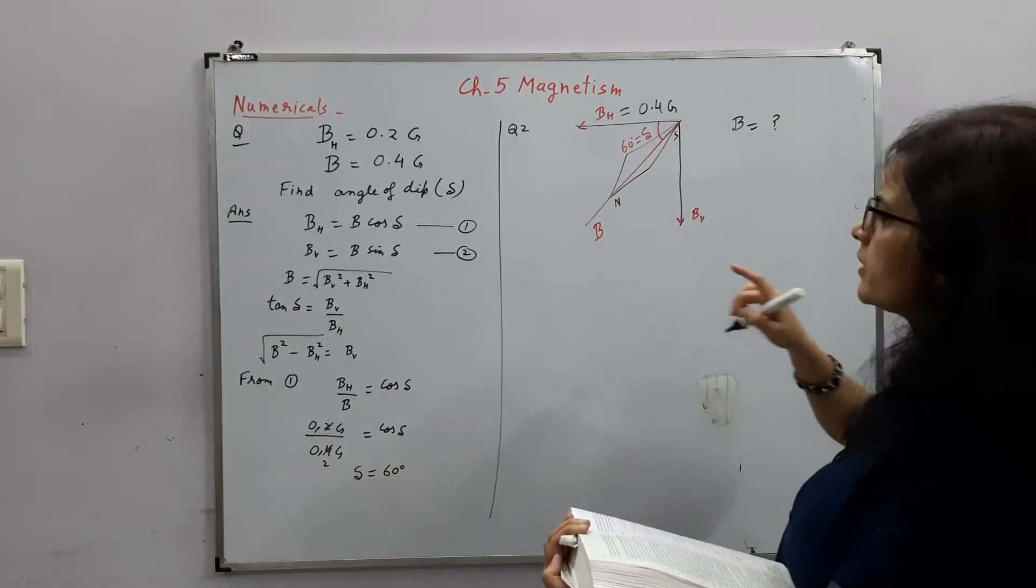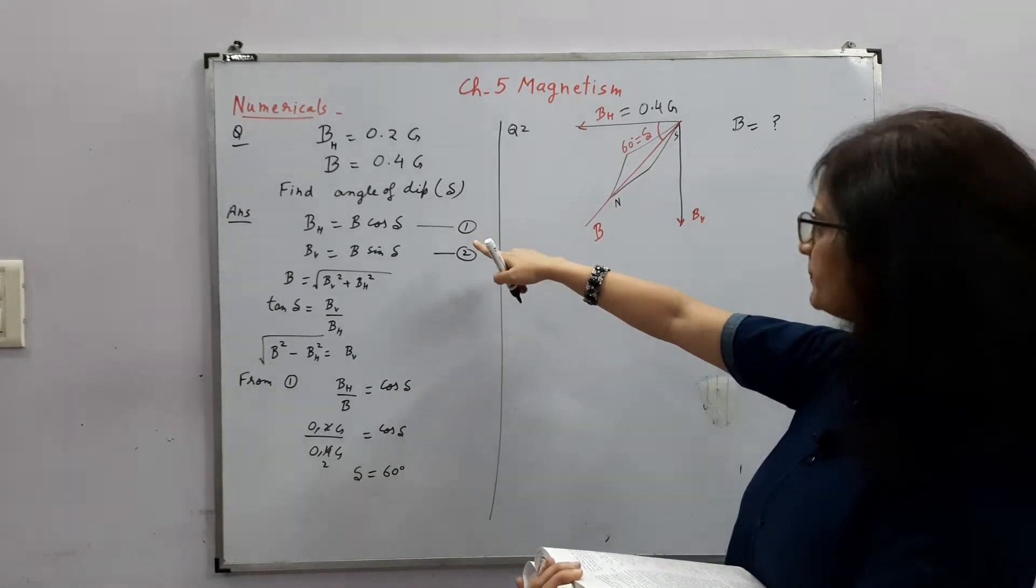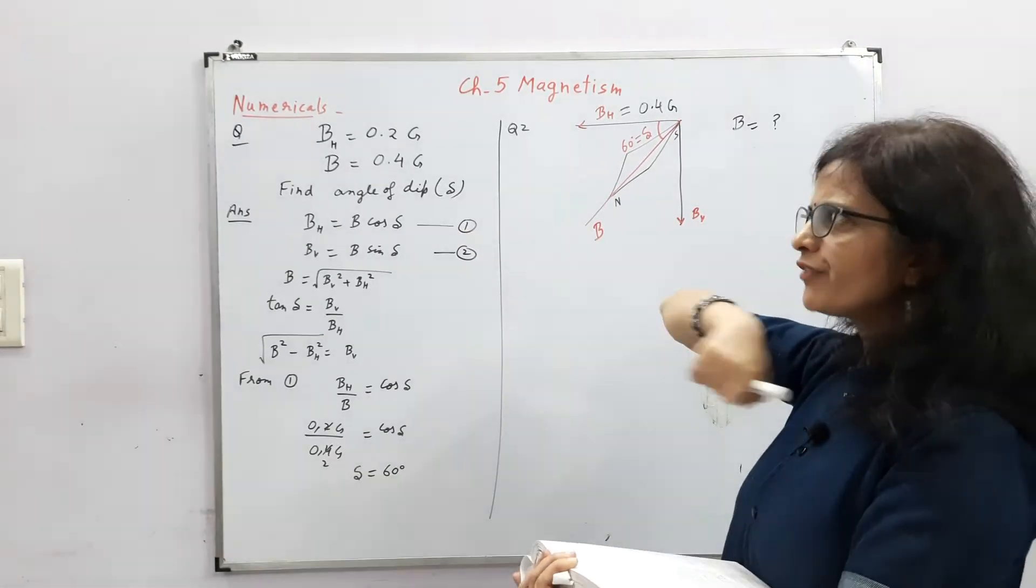So you have to find out this. I think you can easily find it. So we know this formula. BH is given and delta is given. You can find B.